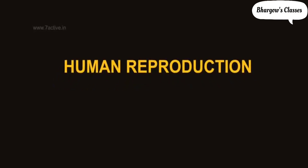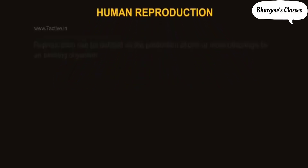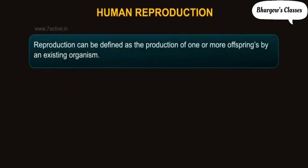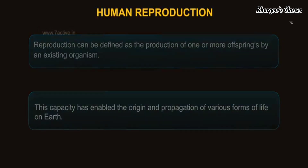Human Reproduction. Reproduction can be defined as the production of one or more offsprings by an existing organism. This capacity has enabled the origin and propagation of various forms of life on earth.